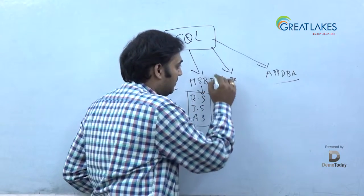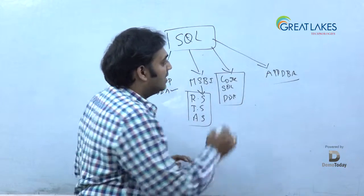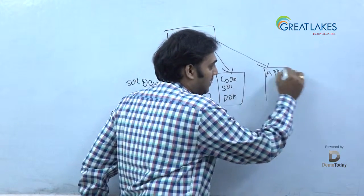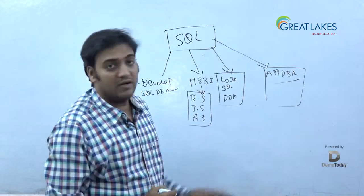Third category is Actual Core SQL DBA. And there is something called App DBA. Let me explain the difference between App DBA and Core SQL DBA.